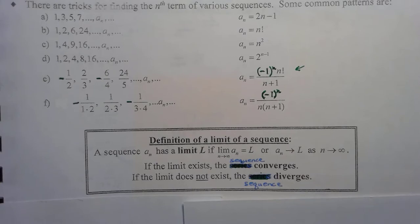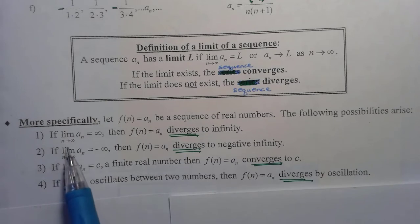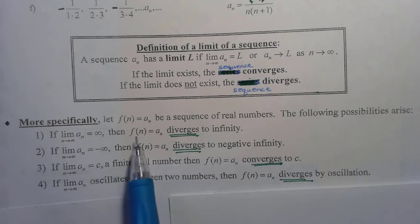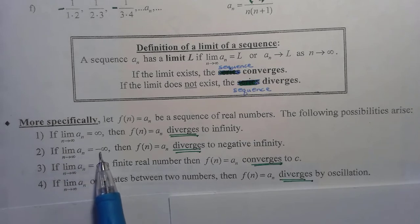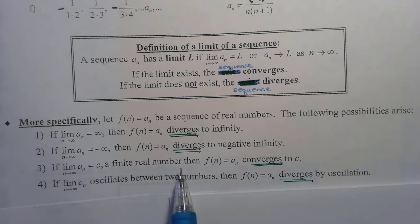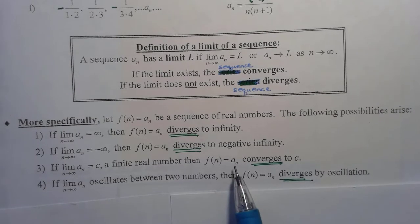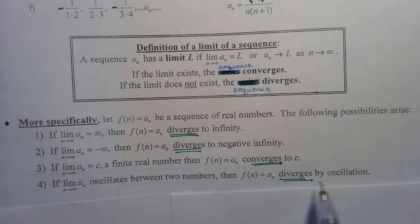More specifically, let f be a function where f of n equals A sub n, the general term of my sequence. If the limit as n goes to infinity is infinity, then the sequence diverges to infinity. If the limit is negative infinity, then the sequence diverges to negative infinity — meaning the nth term gets larger and larger in the negative direction. If the limit is c, a finite real number, then the sequence converges to c. If the limit oscillates between two numbers, then we diverge by oscillation.